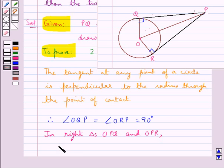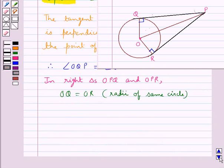the right triangles OPQ and OPR. In these two triangles we have OQ is equal to OR as they are the radii of the same circle, then OP is equal to OP, it is the common side. So therefore triangle OPQ is congruent to triangle OPR